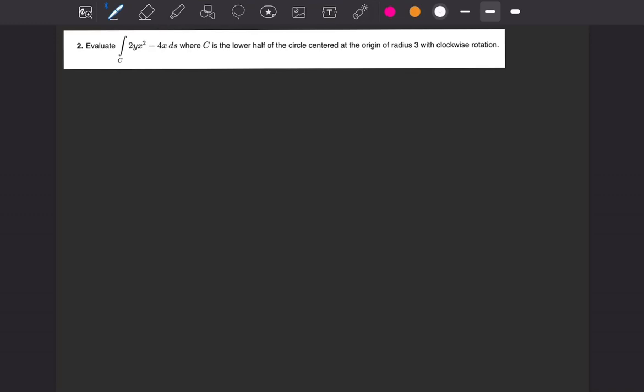Alright, we have a line integral and I'm going to show you how to solve it. So first things first, let's read through it. We have the integral on c of 2yx squared minus 4x, all with respect to s, so integrated all with respect to s.